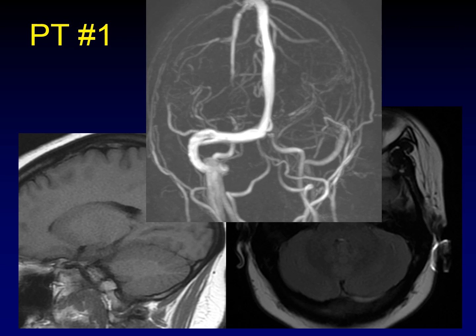These two patients looked identical on MRI. They had the same abnormality on FLAIR, the same lack of flow void on T1, and the same lack of flow on MR venography. But one of them had slow flow in a patent sinus, and the other had an acute dural venous sinus thrombosis. This is the problem with MRI — it can't tell the difference between slow flow and acute thrombus, and this is why CT venography is better in this diagnosis.